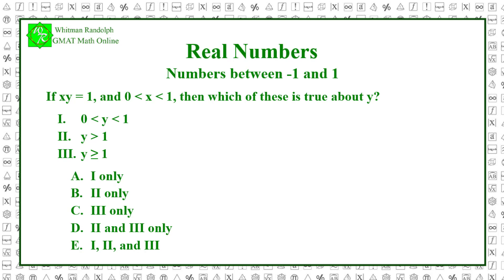If xy equals 1, and x is between 0 and 1, but not equal to 0 or 1, then y must be something more than 1. So, choice 1 is false, and choice 2 is true. What about choice 3?